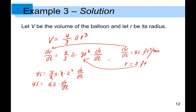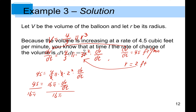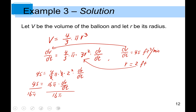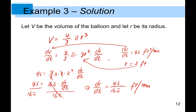Dividing both sides by 16π, we end up with dr/dt = 4.5 / (16π) feet per minute. That is the unit for the rate of change of radius over change of time, and this gives us the detailed solution for the inflating balloon problem.